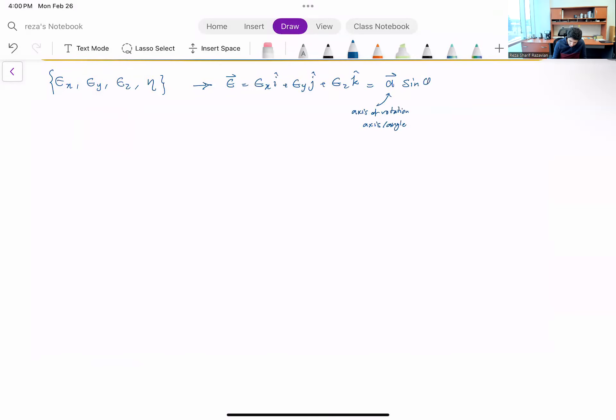Times sine of phi over two. And phi was the angle of rotation. And the last one, eta, was just cosine of phi over two. So that's how you could easily find the Euler parameters if you know the axis and angle of rotation.